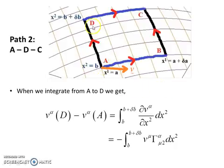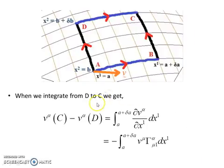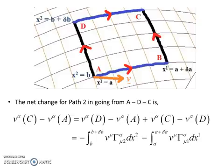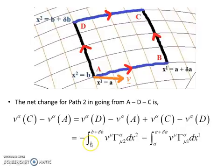Now let's look at pathway 2, where we go from a to d to c. Integrating from a to d, the first part, we get dv alpha dx2 equal to minus the integral from b to b plus delta b of the components of the vector times the affine connection in the x2 direction. When we integrate from d to c, moving along in the x1 coordinate direction, we have the integral from a to a plus delta a. The net change for path 2, from a to d to c, is v of c minus v of a — just the sum of the individual changes along the two paths — giving us this expression.